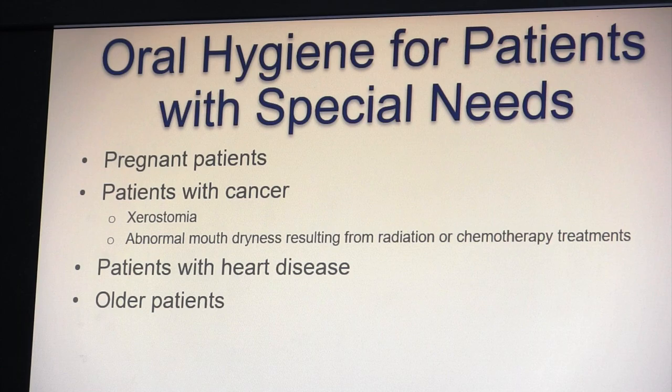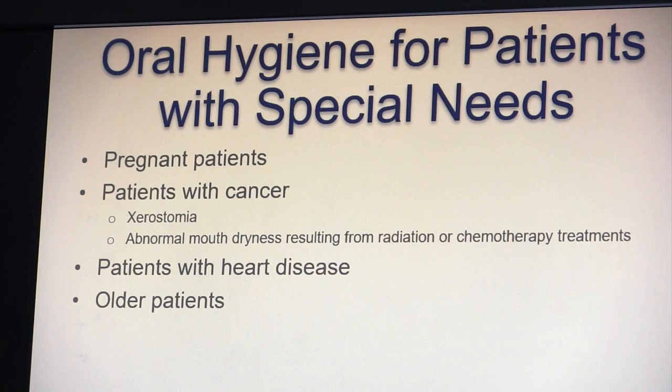Patients with cancer often have a very dry mouth due to radiation and chemotherapy. We may recommend customized fluoride trays — we take impressions and make a tray fitted to their mouth, and they do a fluoride regimen at home. With dry mouth, patients get cavities very easily, so we try to help prevent that with fluoride.